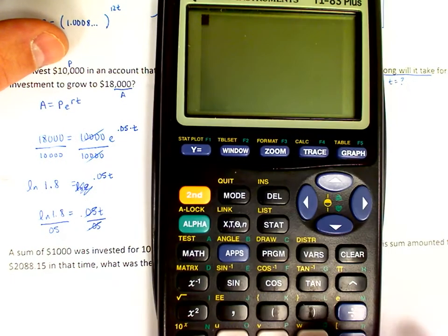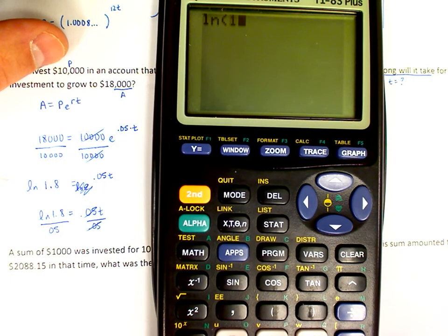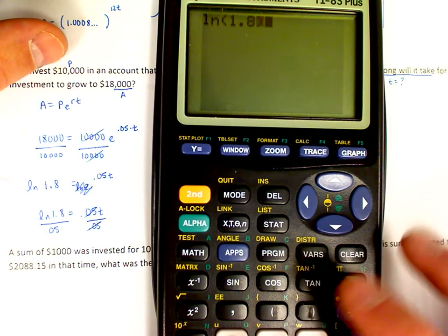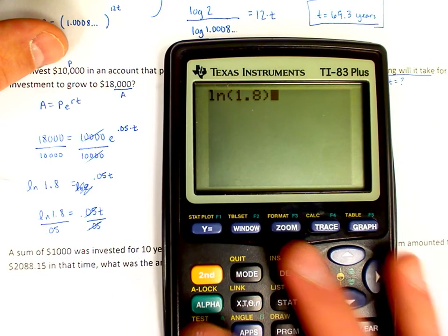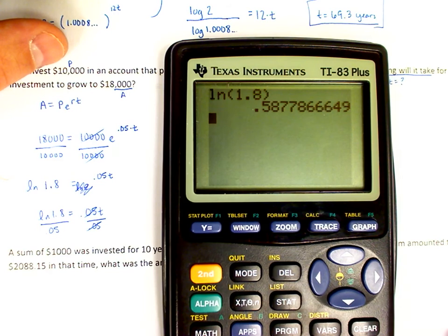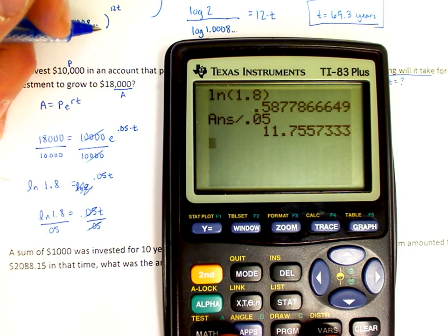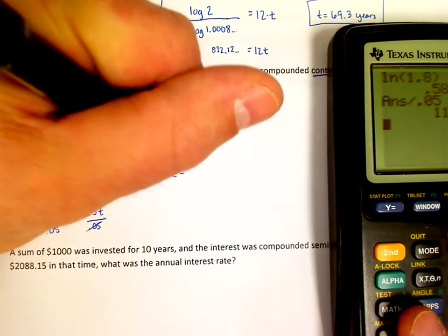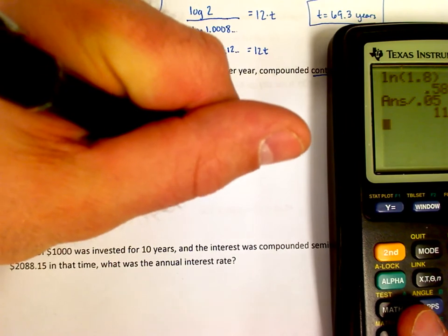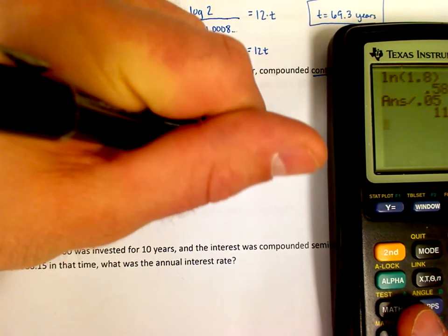So on my calculator, I'm going to do ln of 1.8. I need to be very careful here that I end the logarithm, so hit enter. Now I'm going to divide by 0.05, and the answer is t, and this is in years, 11.755 years. So let's just round it to 11.8. t is 11.8 years.